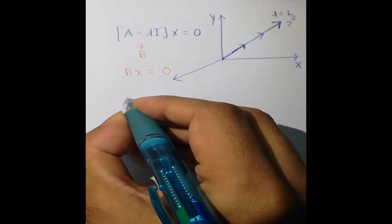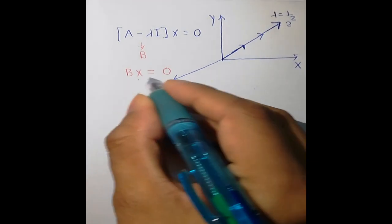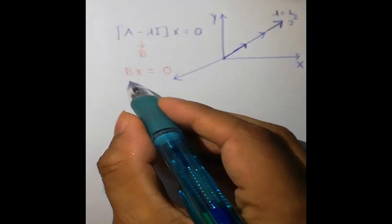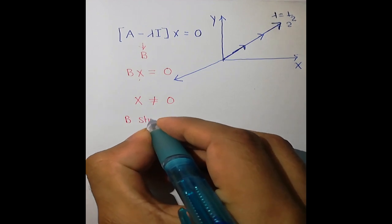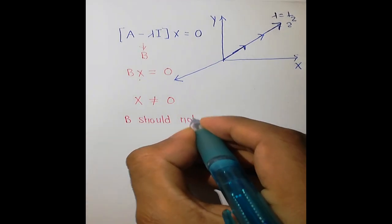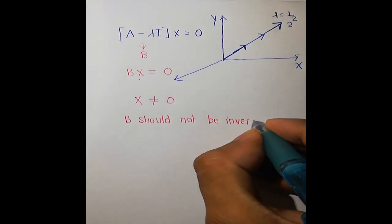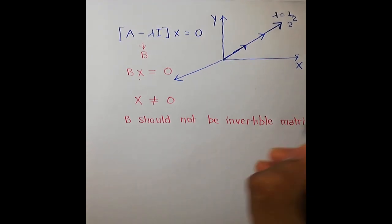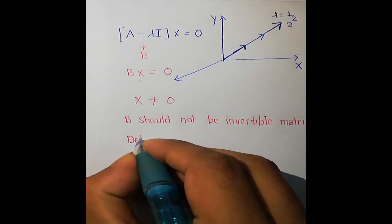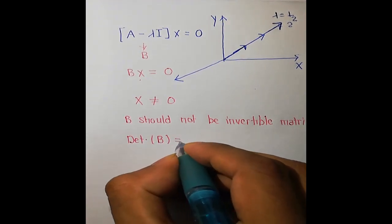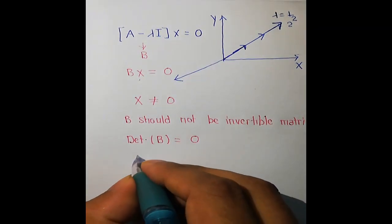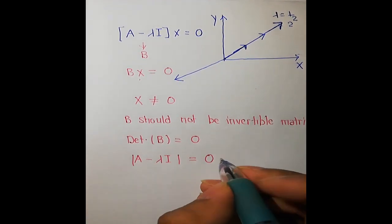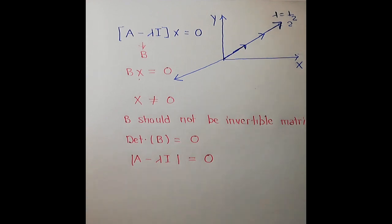If B were an invertible matrix, then x would have to be 0. But we know x is nonzero, so B must not be invertible. This means the determinant of B must be 0 — that is, det(A - λI) = 0. By solving this determinant you can calculate the eigenvalues.